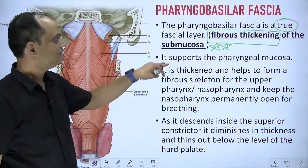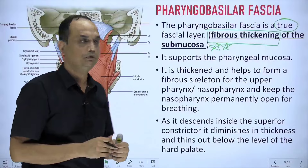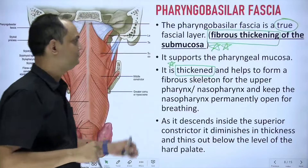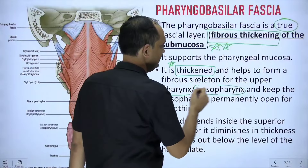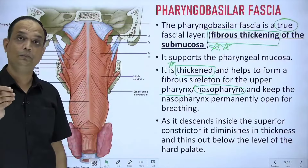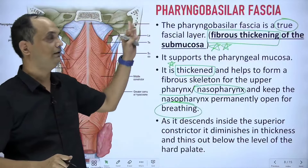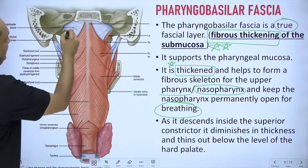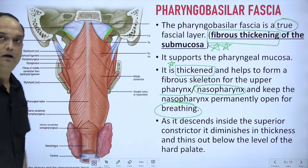The pharyngobasilar fascia supports the pharyngeal mucosa because it lies just outside it. It is thickened — that is why it is a true fascia — and it helps to form the fibrous skeleton of the upper part of the pharynx, more specifically the nasopharynx. It keeps the nasopharynx permanently open so that you can breathe comfortably. The pharyngobasilar fascia is the topmost structure present at the top of the pharyngeal tube.